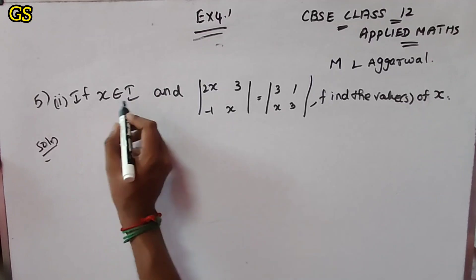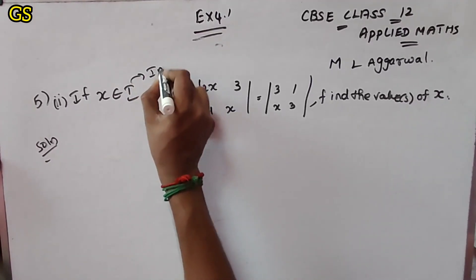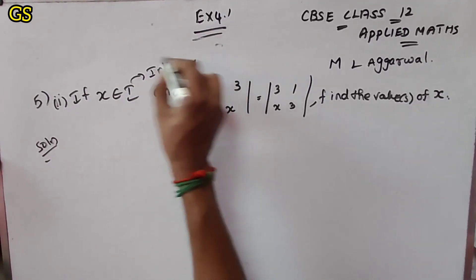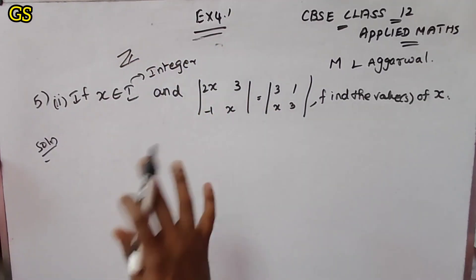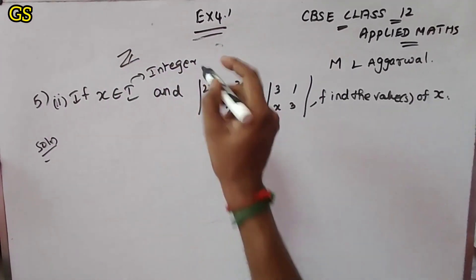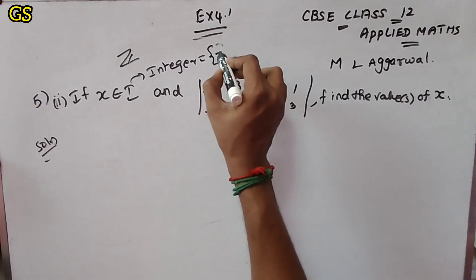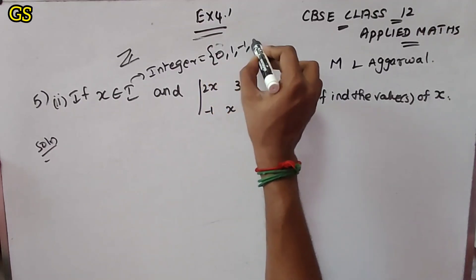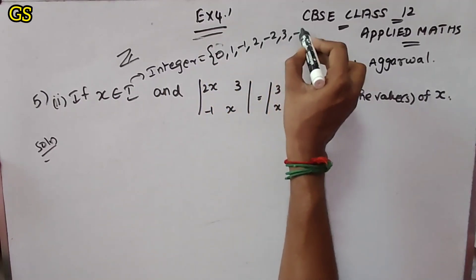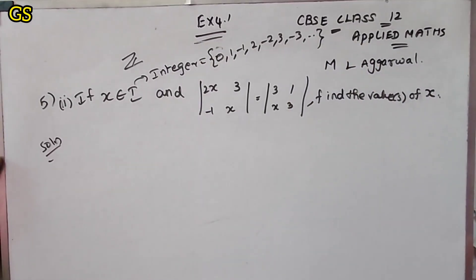Now the second solution: x belongs to integers. Integers are denoted by Z. Integers include 0, +1, -1, 2, -2, 3, -3, and so on. These are the integers.